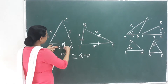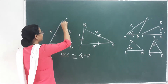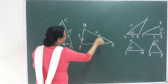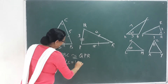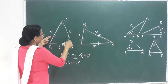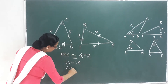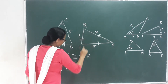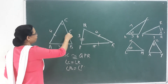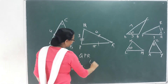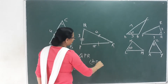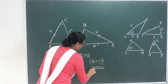The three angles: angle E, C — the angle is equal to R. The four angles: angle B is equal to four angles, angle P. Now the five angles: angle A is equal to 5 in the opposite direction — this is angle Q — this is equal. This is what we have told.